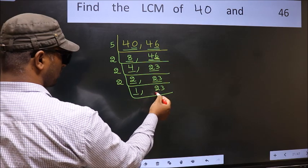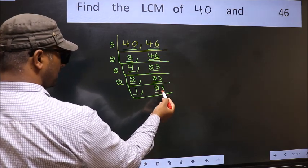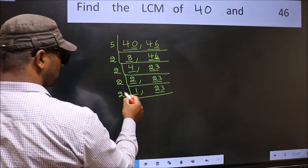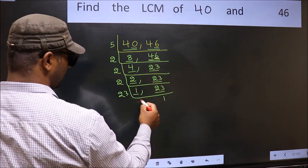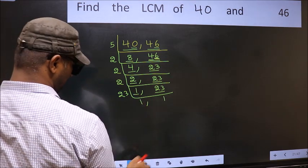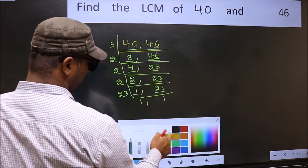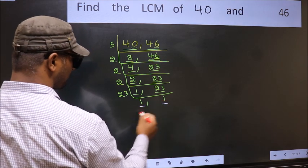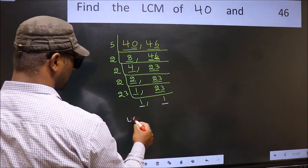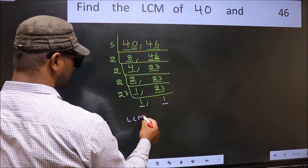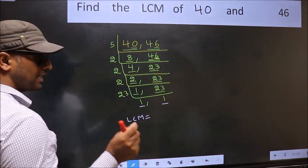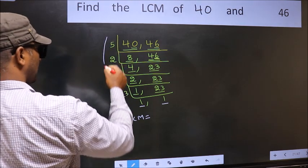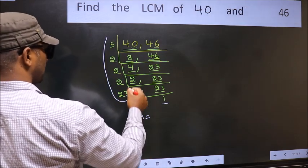Now focus on the other number, 23. 23 is a prime number, so 23 times 1 is 23. We got 1 in both places. So our LCM is the product of these numbers.